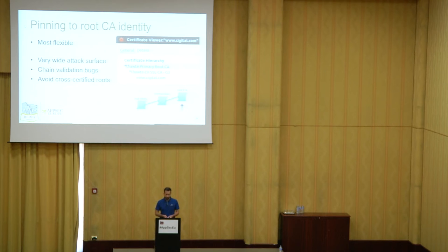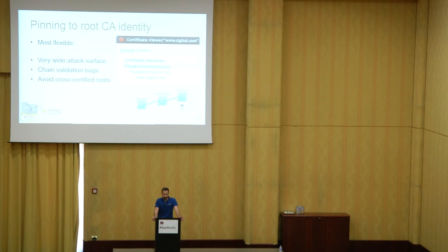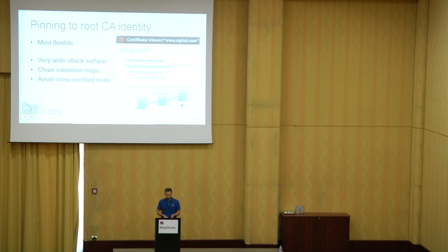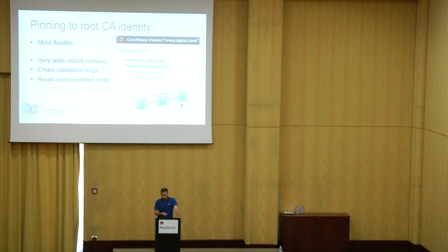Moving up the chain to the root CA: if you pin to the root CA identity, it's very flexible because you don't need to pay much attention to when you rotate certificates — it's going to be signed by Comodo all the time, as long as you keep Comodo. The problem is that you're going backwards: while your original goal was to trust only your server, now you trust only a certificate authority. That is actually a good balance for most cases. There are some tricky parts around cross-certified roots, and you have to make sure the CA you pin to is present on all your clients, which may not always be the case. You also open yourself up to chain validation bugs.